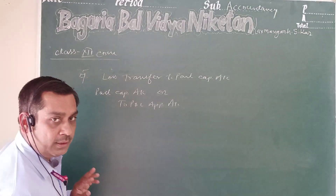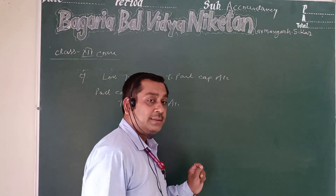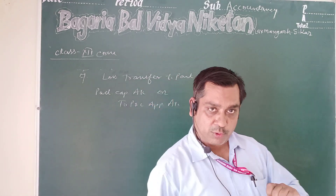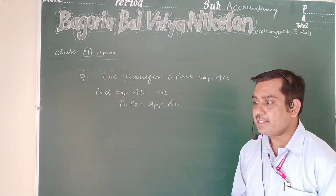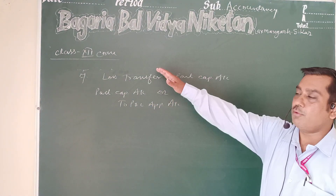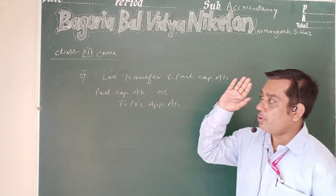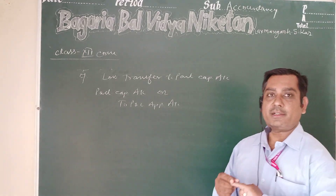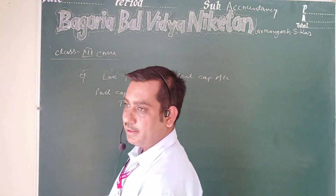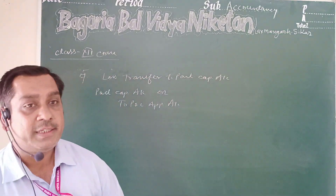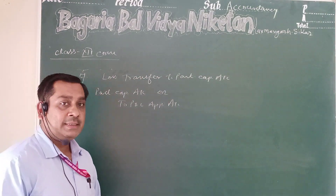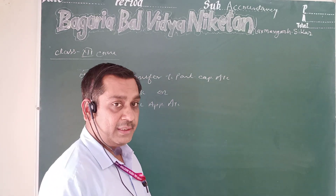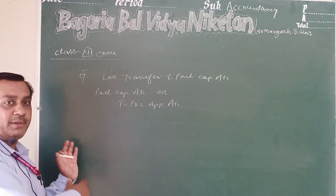So today we discussed the Profit and Loss Appropriation Account format — how it is prepared, and whatever is provided to partners by the business, whether salary, commission, or bonus, all those items are written on the debit side.